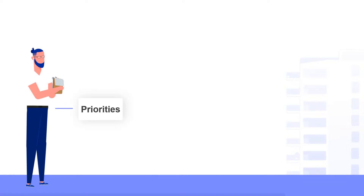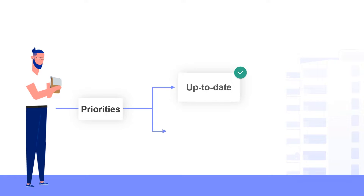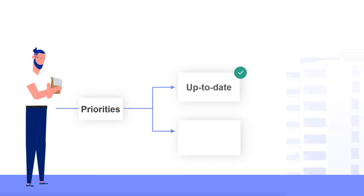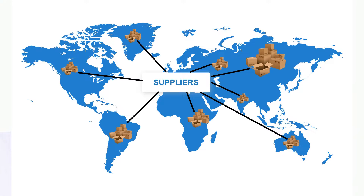As an online retailer, one of your main priorities is keeping your inventory up to date. You want to make sure that the products you're selling are in stock and that the prices are accurate. This can be a lot of work, especially if you sell products from multiple suppliers.